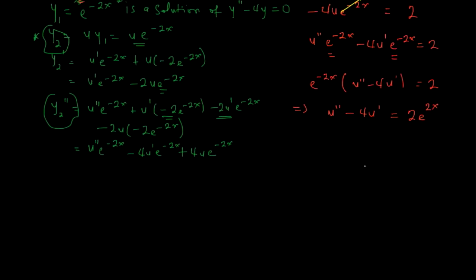At this stage we make a substitution to reduce the second-order equation to first order — that's why it's called reduction of order. The equation still contains the second derivative, so we let u' = w and u'' = w'. Substituting, we get: w' minus 4w = 2e^(2x).